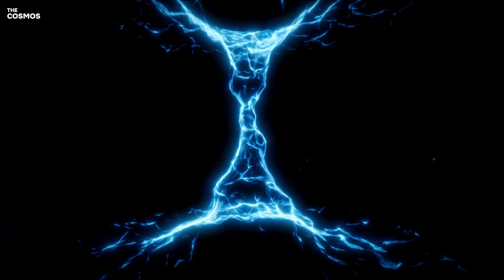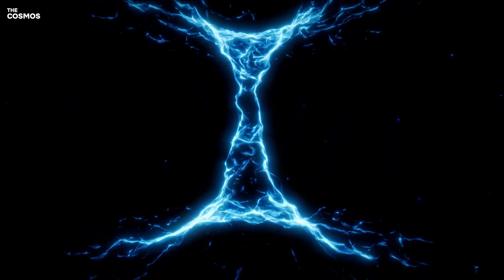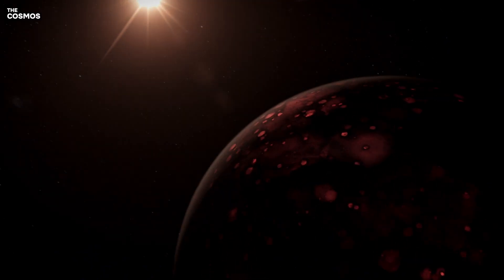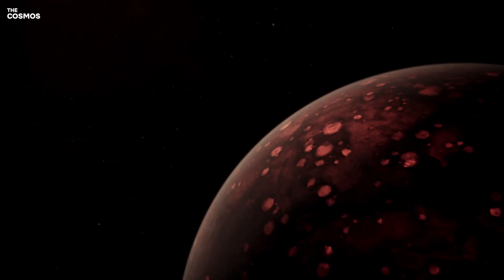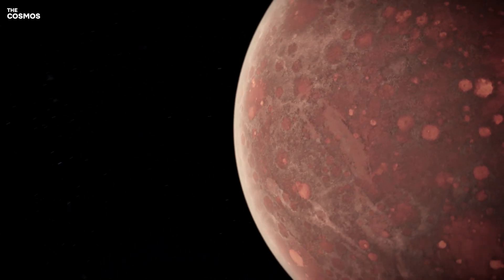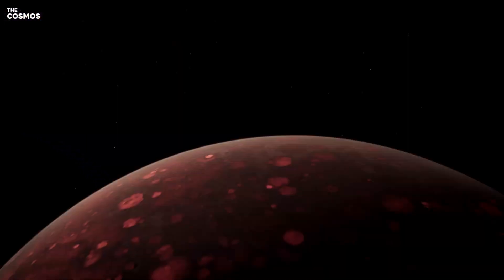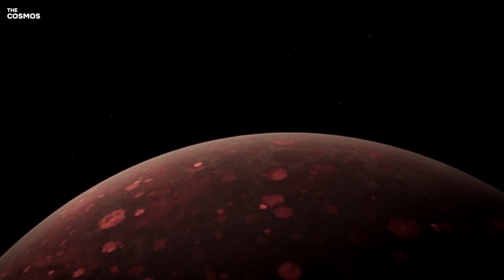This research not only sheds light on the fate of planetary systems as their central stars age and die, but also provides valuable insights into the composition of exoplanets orbiting other stars. By understanding the dynamics of these systems, even in their final stages, astronomers can glean information about the bulk composition of planets beyond our own solar system.